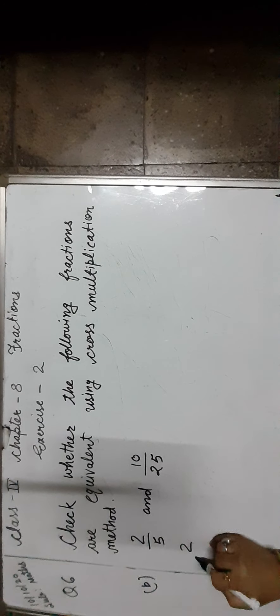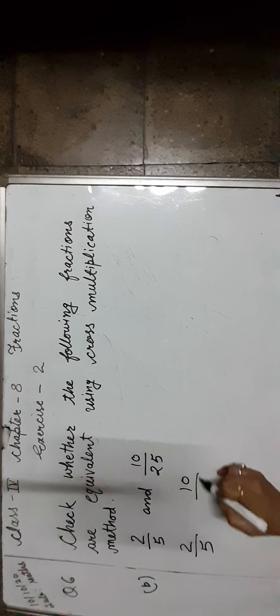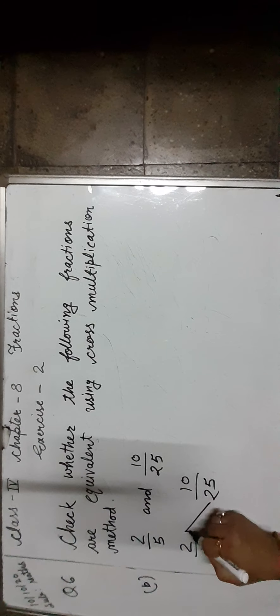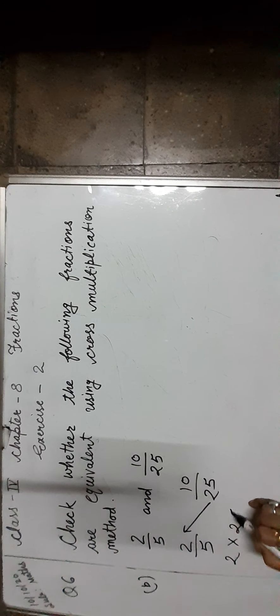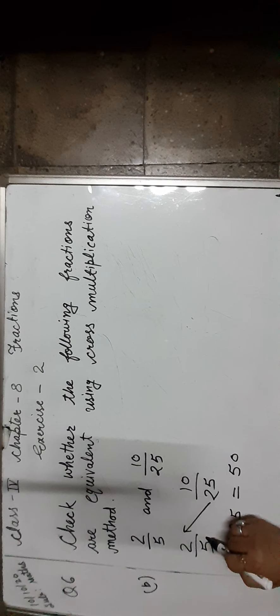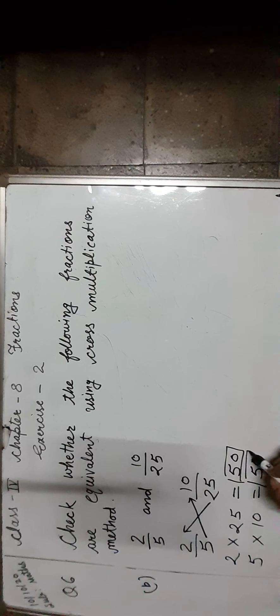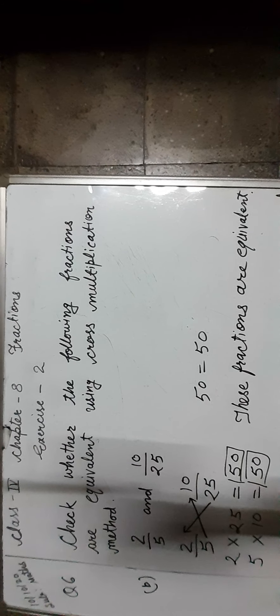Now, the second problem: 2 upon 5 and 10 upon 25. Multiply the numerator of the first fraction with the denominator of the second fraction: 2 into 25 is equal to 50. And the denominator of the first fraction with the numerator of the second fraction: 5 into 10 is equal to 50. The products are equal — 50 is equal to 50 — so these fractions are equivalent. Now do the remaining questions of question number 3, question number 4, and question number 5 of chapter 7.